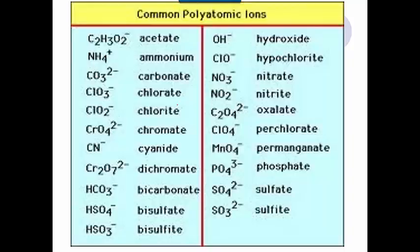So here's just a list of some common polyatomic ions. By no means is this list complete, there's lots of other ones. But notice that it's a whole group of elements. If you take a look at this first one, acetate, it's made up of three different elements.